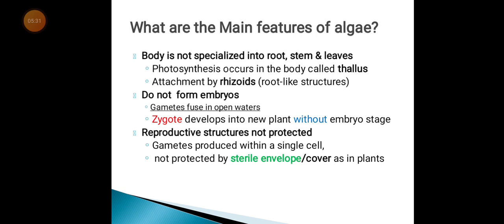These are the features that make algae different from plants. They don't have leaves — they carry out photosynthesis in the thallus. Their attachment is by rhizoids. They don't form embryos. And their gametes are in a single cell, unprotected, unlike in plants.